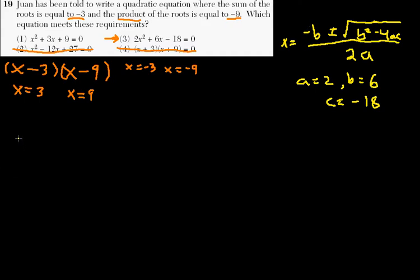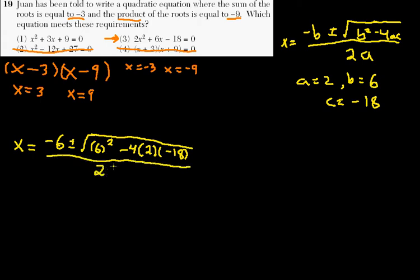Okay, so we plug that into the formula, and we'll go over here, and we get x is equal to negative 6 plus minus the square root, and I'll just leave that there, and we get 6 squared minus 4 times 2 times negative 18. Okay, we're just plugging it into the quadratic formula. All of this is divided by 2 times 2.